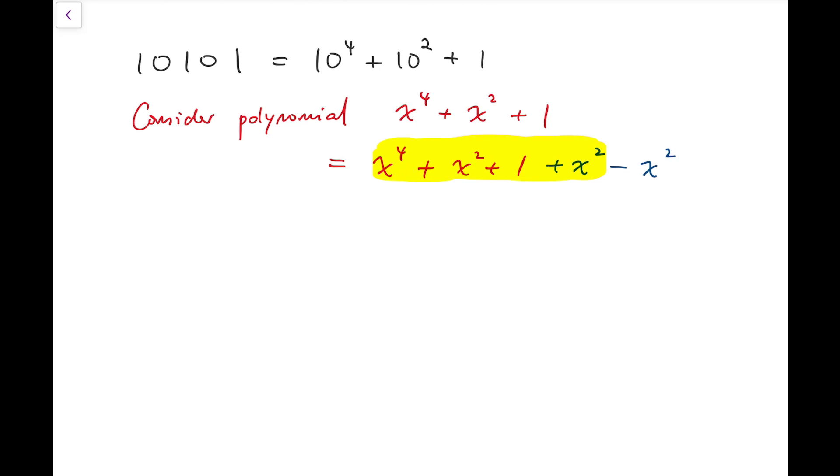Now I'm going to factorize the yellow group and it's actually equal to x squared plus 1 all squared and subtracted by x squared. And this is x squared plus x plus 1 times x squared minus x plus 1 by the identity of the difference of squares.